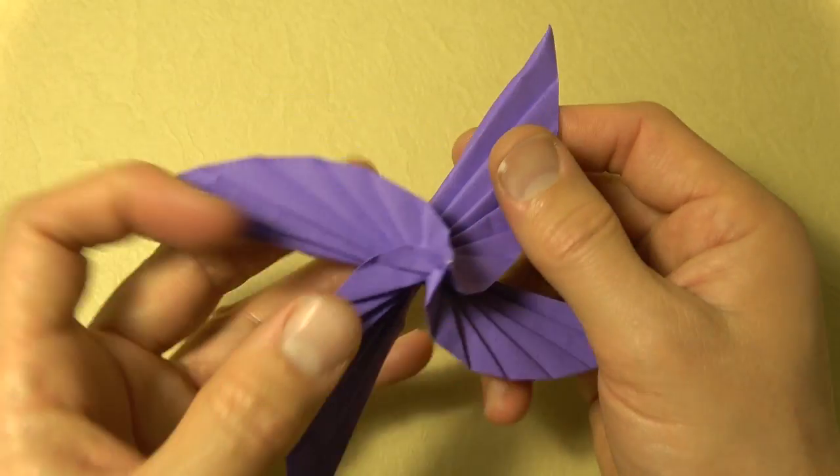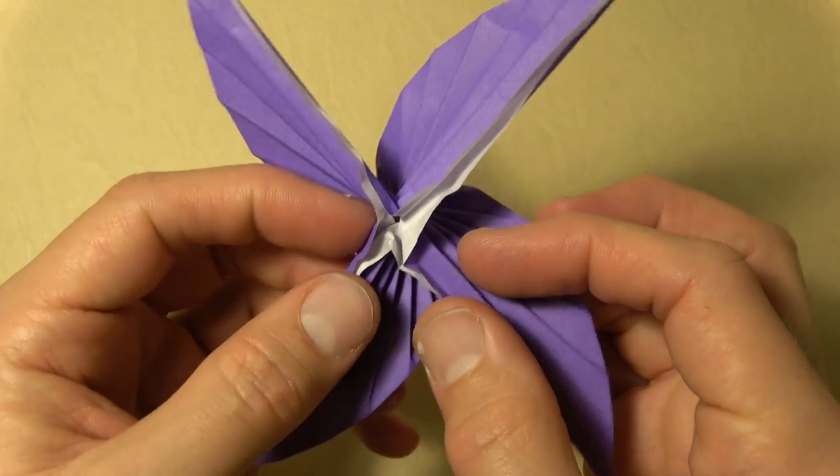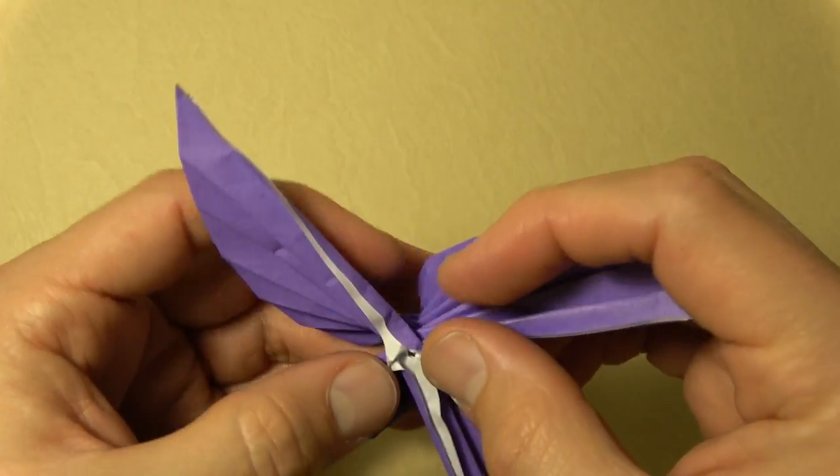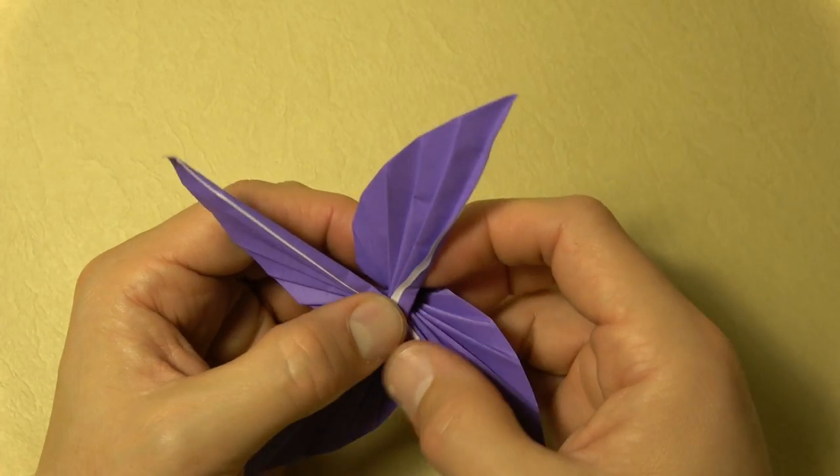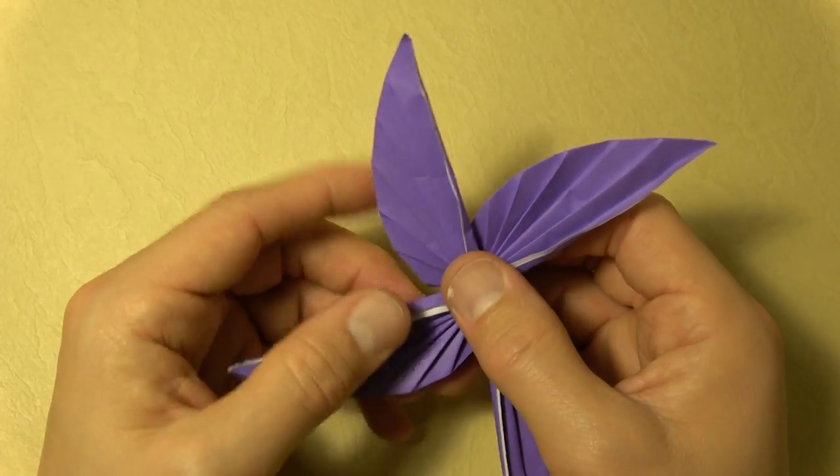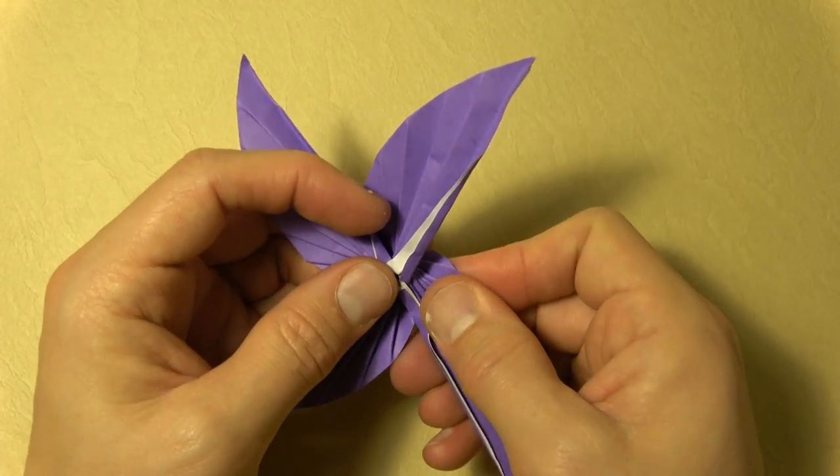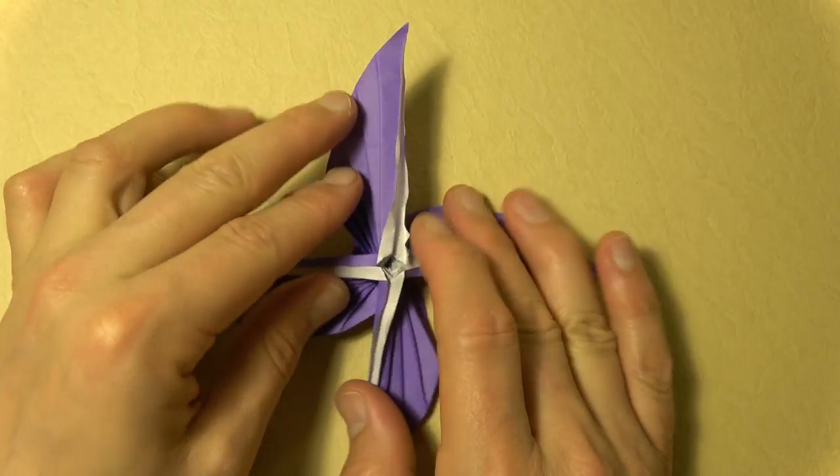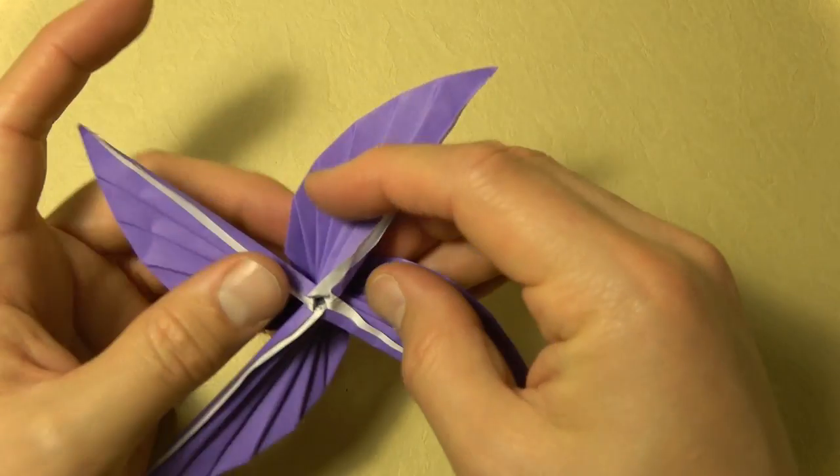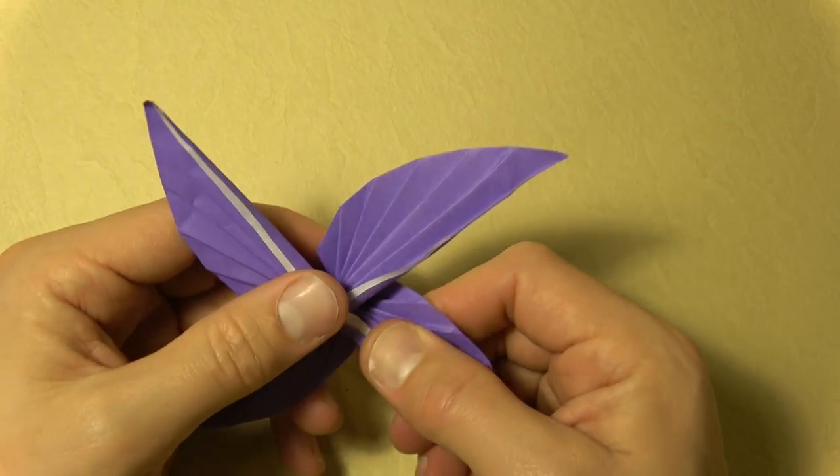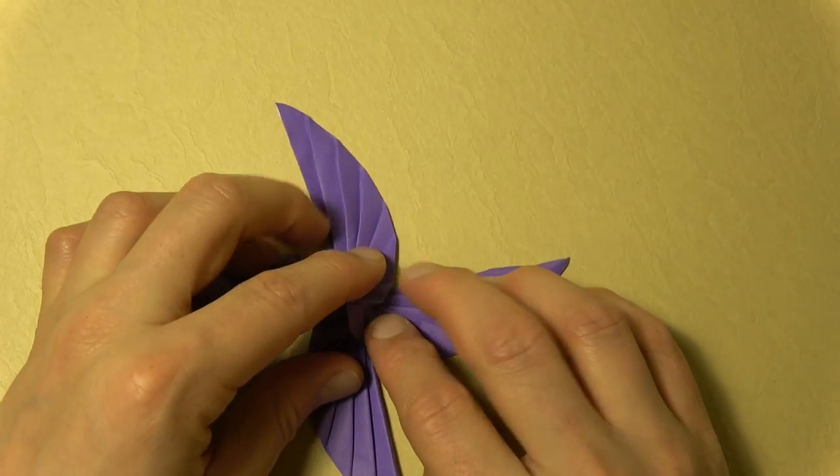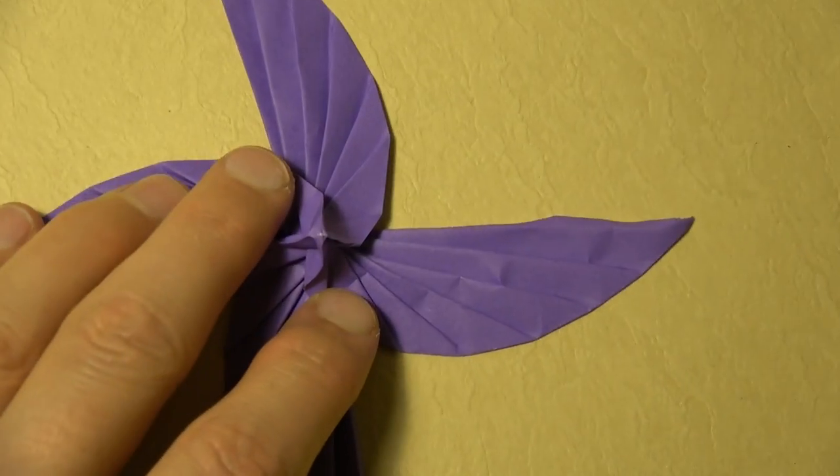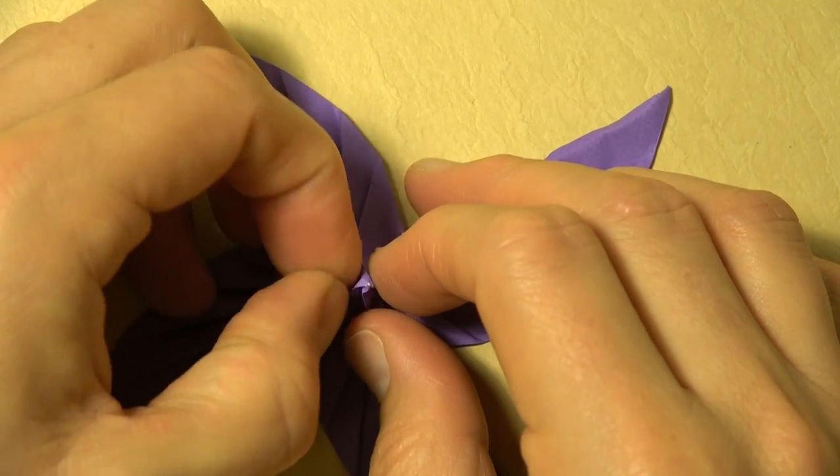So it's like this, and from the other side it looks kind of messy but we can fix it up. Just fold each of the flaps symmetrically. And make sure that the flaps are going exactly in the four directions.